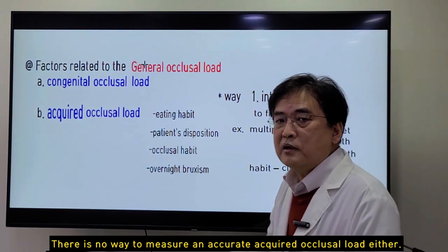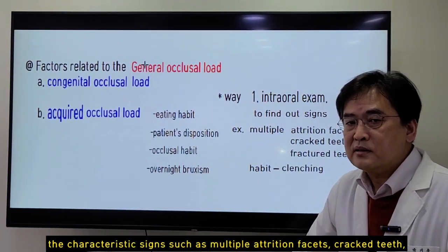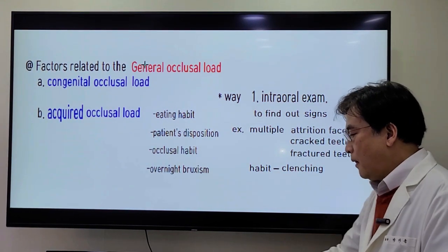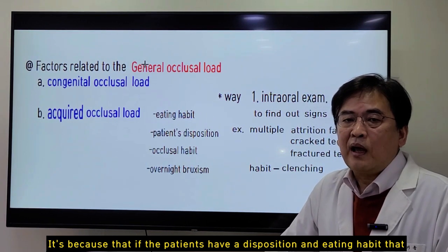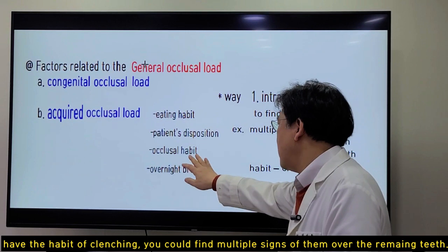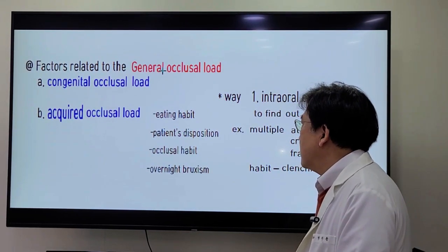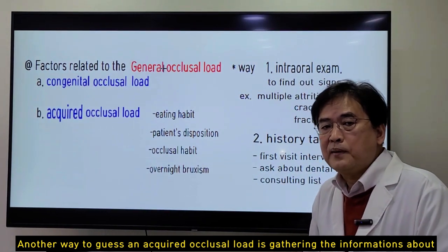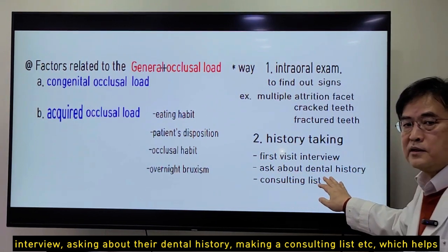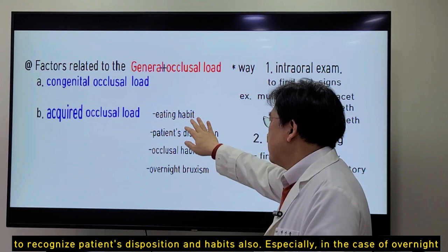There is no way to measure acquired occlusal load accurately either. So we can assess it through intraoral examination to find characteristic signs such as multiple attrition facets, cracked teeth, fractures, and occlusal habit of clenching. It's because if the patient has disposition and eating habits — they like to bite strongly and chew hard and tough food and have occlusal habit of clenching — you could find multiple signs on the remaining teeth. Another way to assess acquired occlusal load is gathering information about the patient during the co-history taking process, such as asking about their dental history and making a consulting list, which helps recognize patient disposition and habits.